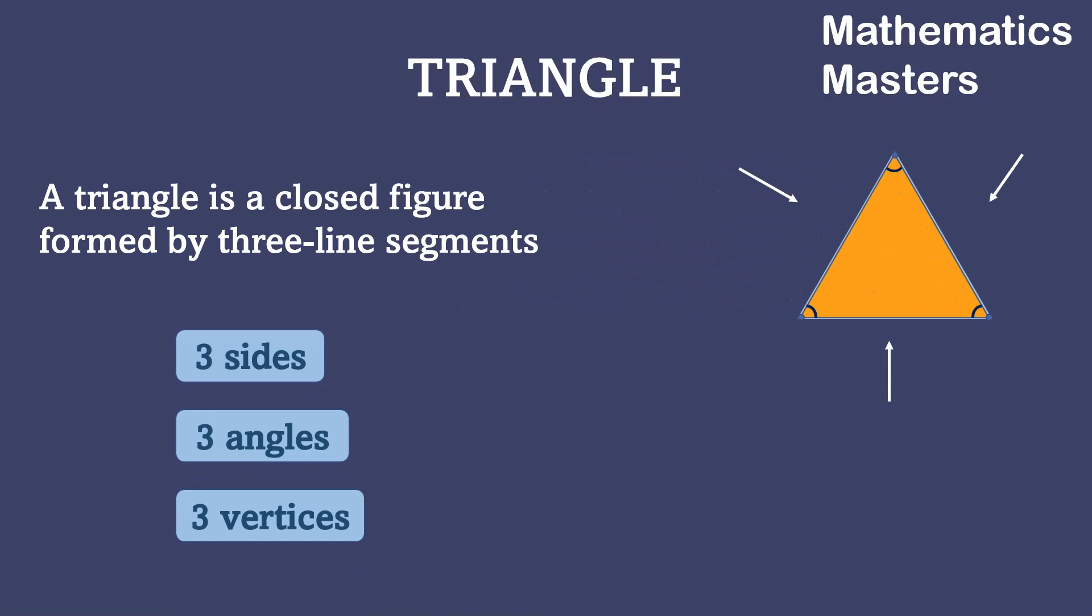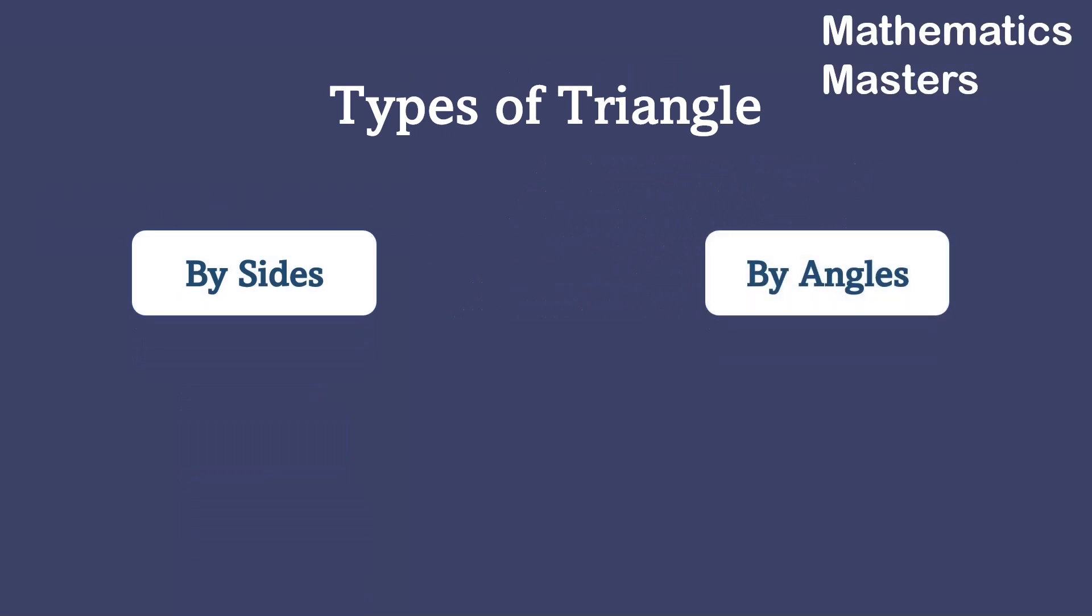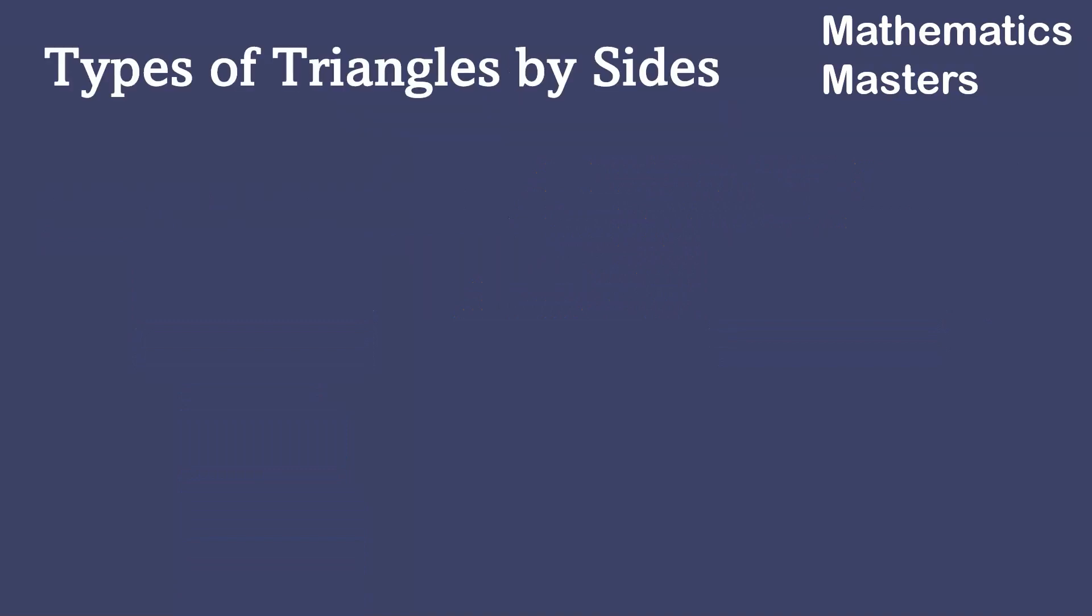We classify the triangles based on two factors. The first one is based on sides and the second one is based on angles. Let us first look at the different types of triangles based on sides.